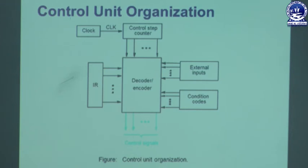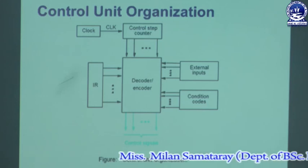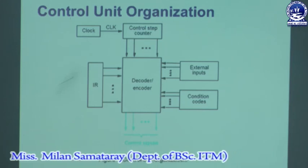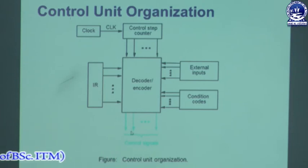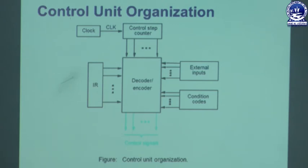A controller that uses this approach can operate at high speed but with little flexibility, and the complexity of the instruction set is limited. This hardware control unit consists of the instruction register, control step counter, external input signals, condition code flags, and one decoder-encoder circuit. By getting the content of all of these, the decoder-encoder circuit generates the control signals in a proper sequence.